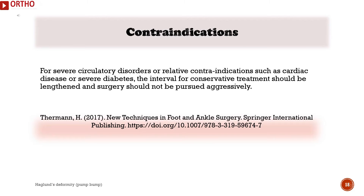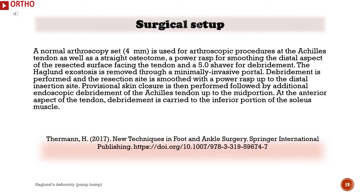Contraindications: For severe circulatory disorders, or relative contraindications such as cardiac disease or severe diabetes, the interval for conservative treatment should be lengthened and surgery should not be pursued aggressively. Surgical setup: A normal arthroscopy set (4 mm) is used for arthroscopic procedures at the Achilles tendon, as well as a straight osteotome, a power rasp for smoothing the distal aspect of the resected surface facing the tendon, and a 5.0 shaver for debridement. The Haglund exostosis is removed through a minimally invasive portal.